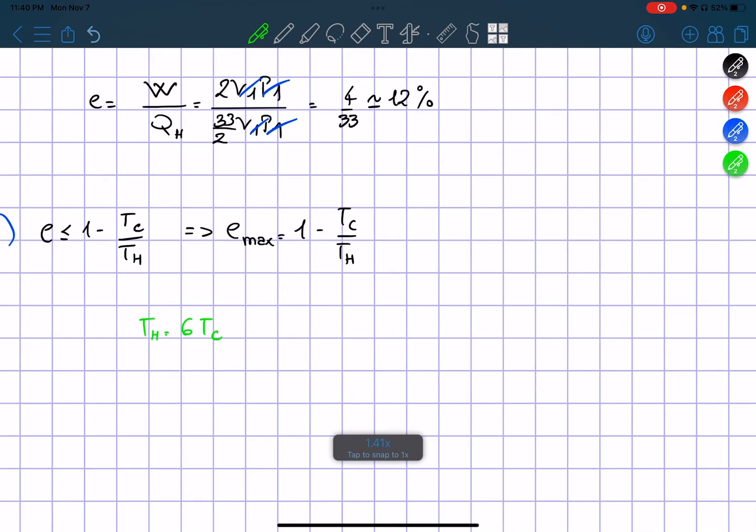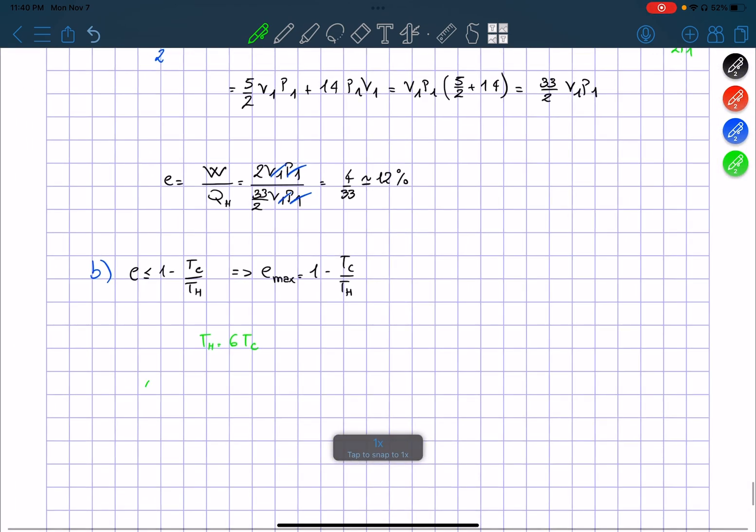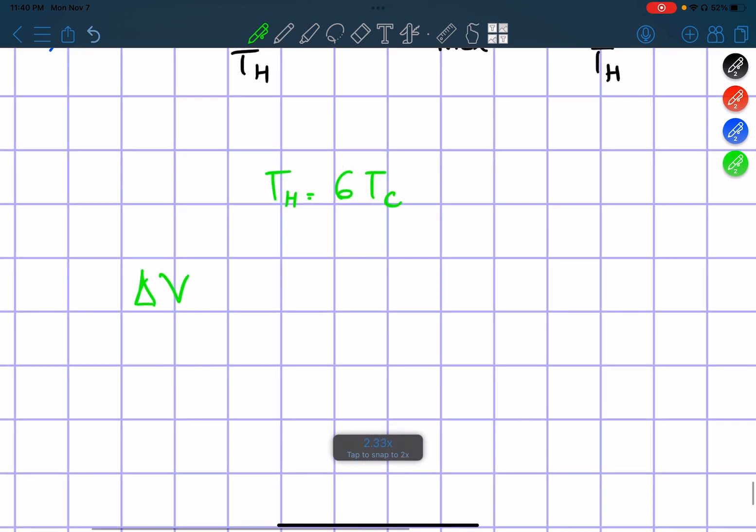And we know that T hot is going to be equal to 6 times T cold, because we know that we have a change in volume and a change in pressure.